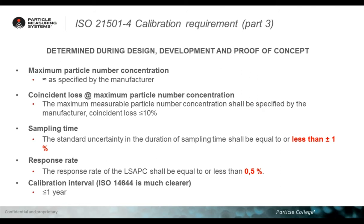Next is the sampling time — the accuracy of the instrument in controlling sampling time. This is extremely important because we need to control particles in a specific period of time or for a specific volume, and the volume is calculated considering the flow rate and the time. The response rate is essentially the ability of an instrument to quickly jump from a very clean situation to a dirty one — how well your instrument can switch from clean air to very dirty air sampling.